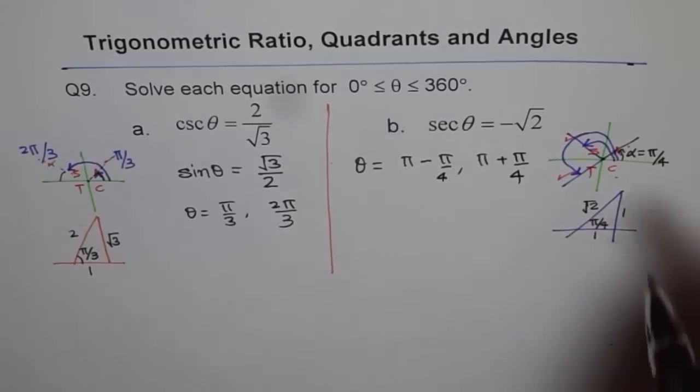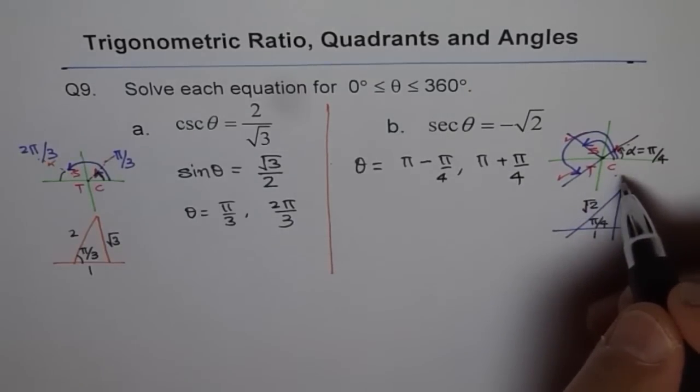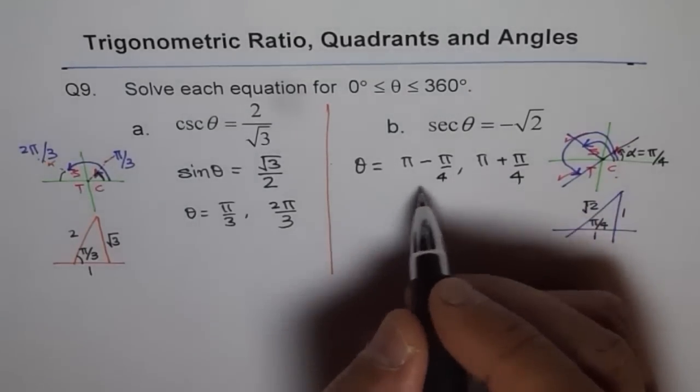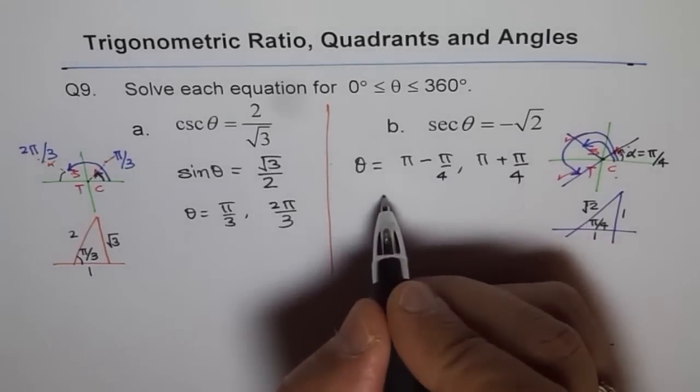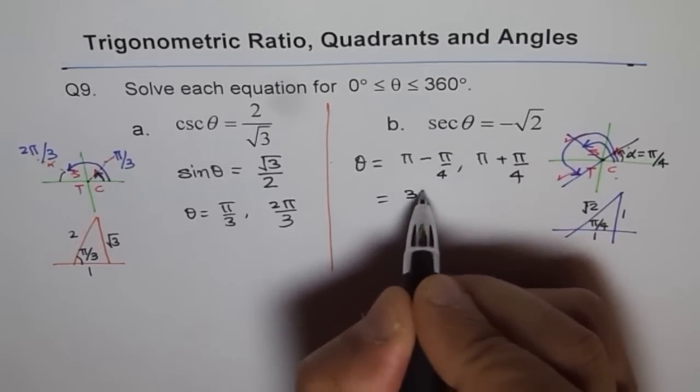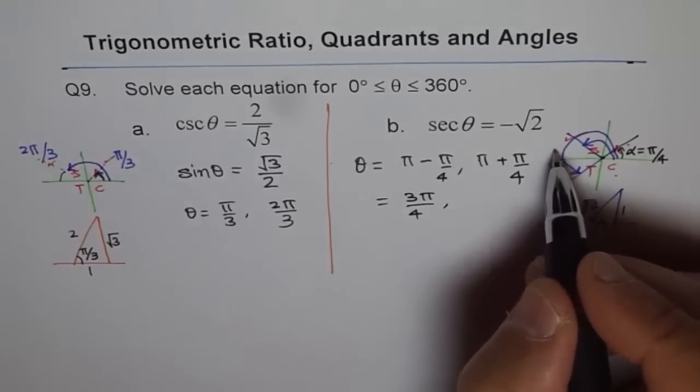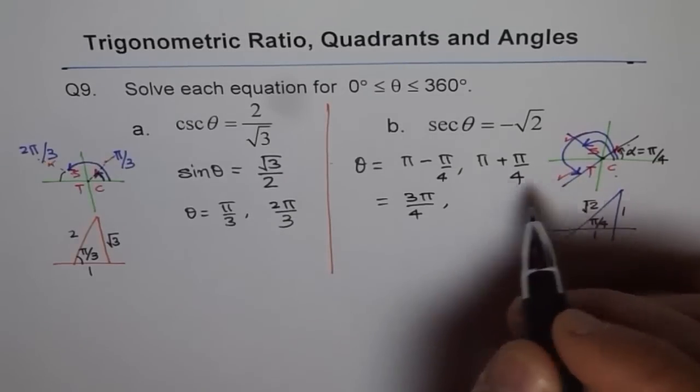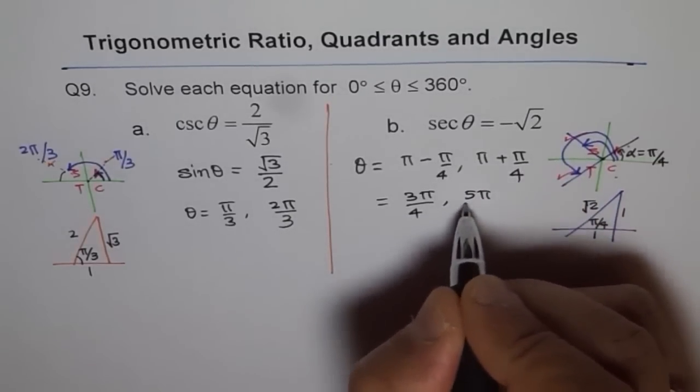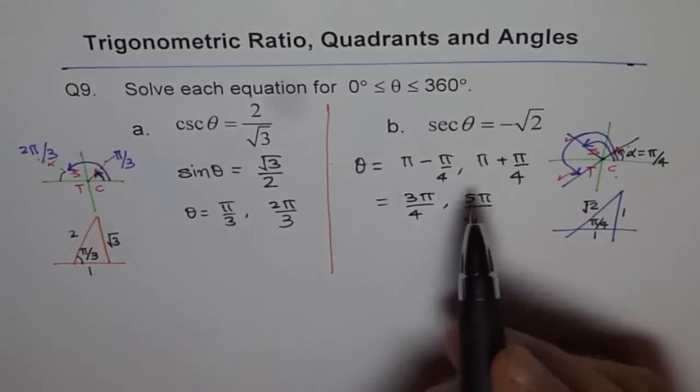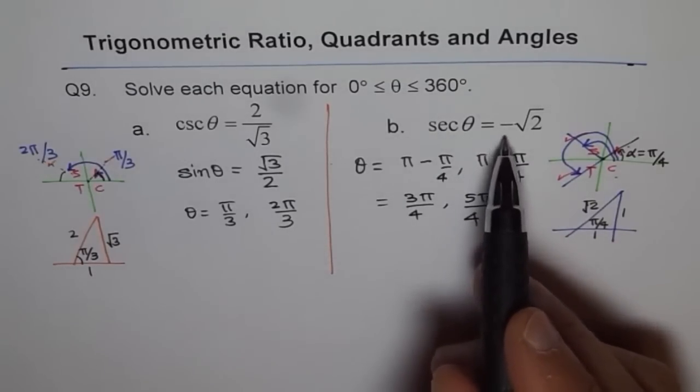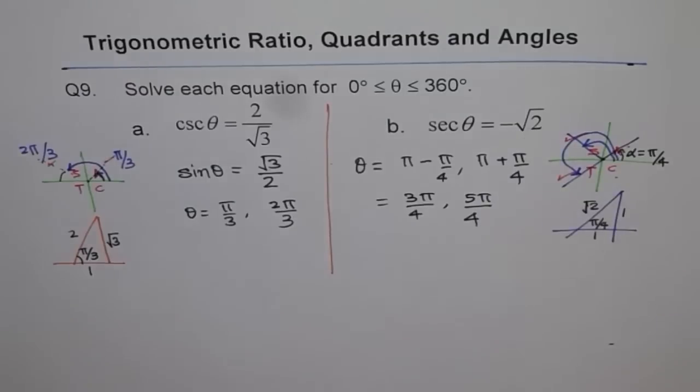These are the two solutions as you can see from here. So that is 4 minus 1 is 3 pi by 4, and pi is 4 pi by 4 and this is 5 pi by 4. So these are the two solutions for secant theta equals to minus square root of 2.